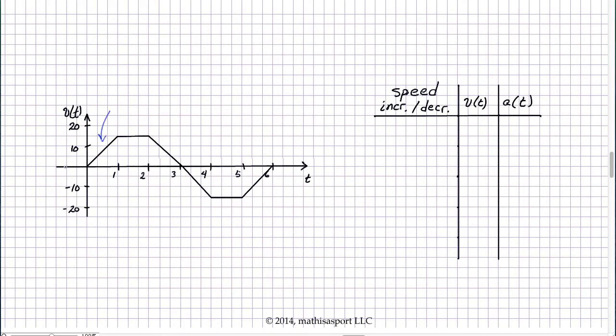Here from zero to one, what do we have? Well, the velocity is certainly positive because any point above the t-axis is positive. The acceleration is positive because the slope here is positive. Now is the speed increasing or decreasing? Well, in fact, it's increasing, and I think that's fairly obvious.